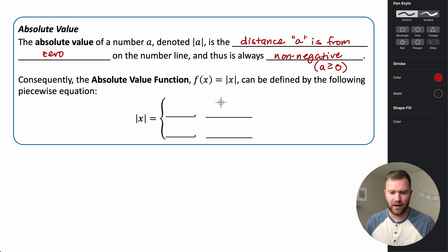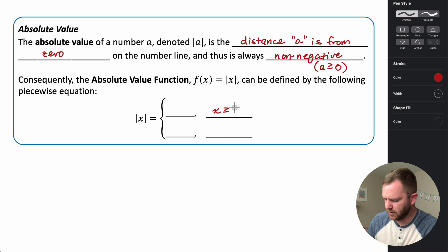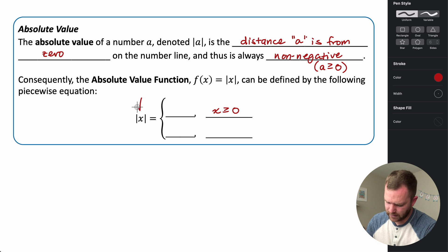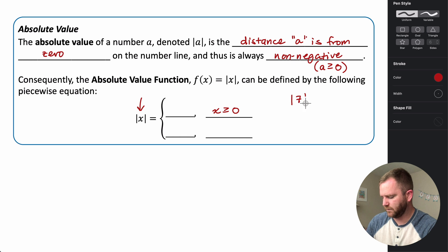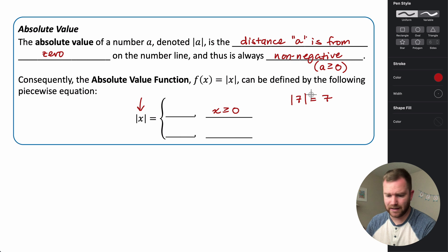If we think about absolute value as a function with inputs and outputs, we can define it as a piecewise equation. For input values greater than or equal to zero — for example, the absolute value of seven is seven, since seven is seven units from zero — the input and output end up being exactly the same.